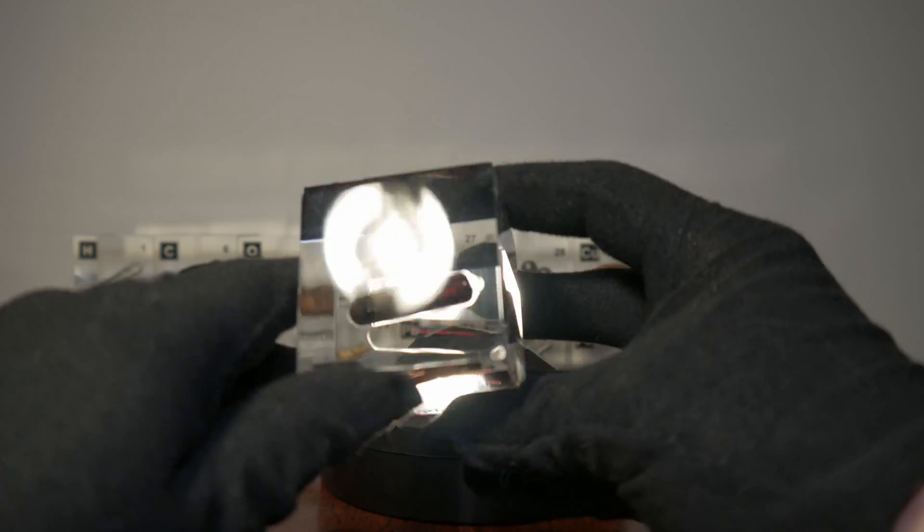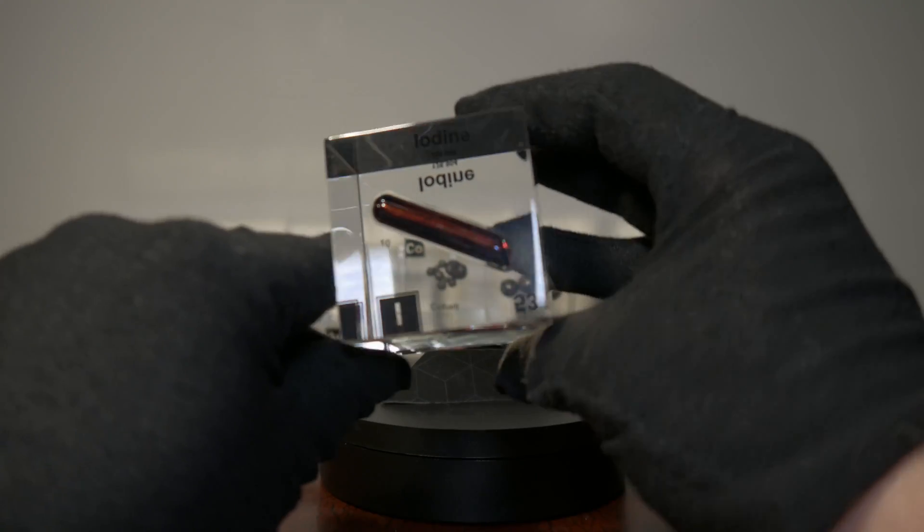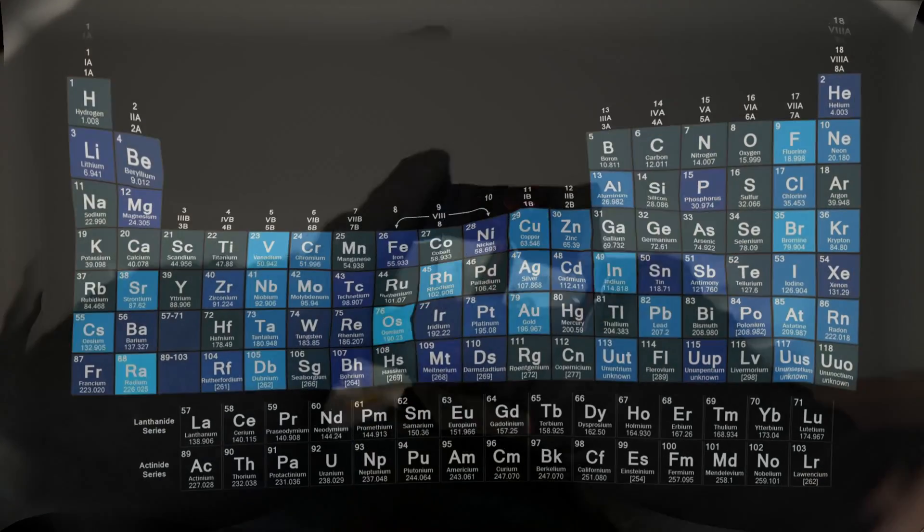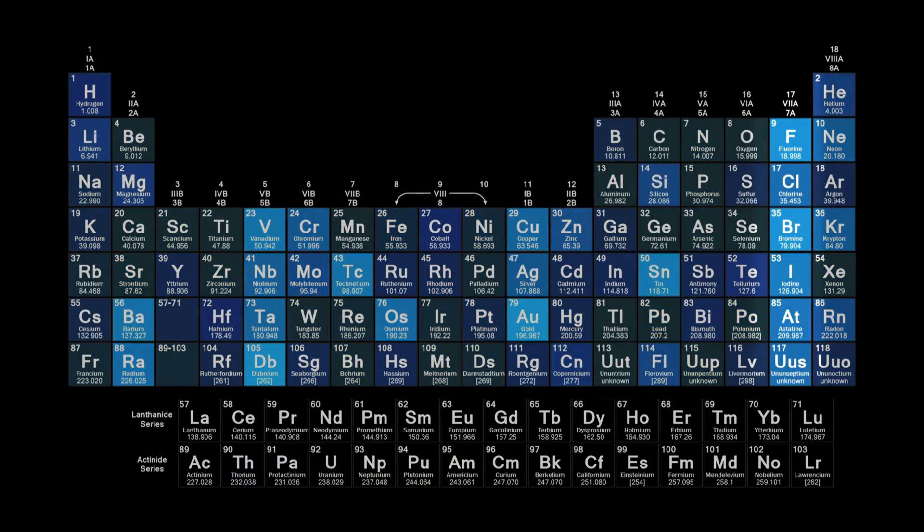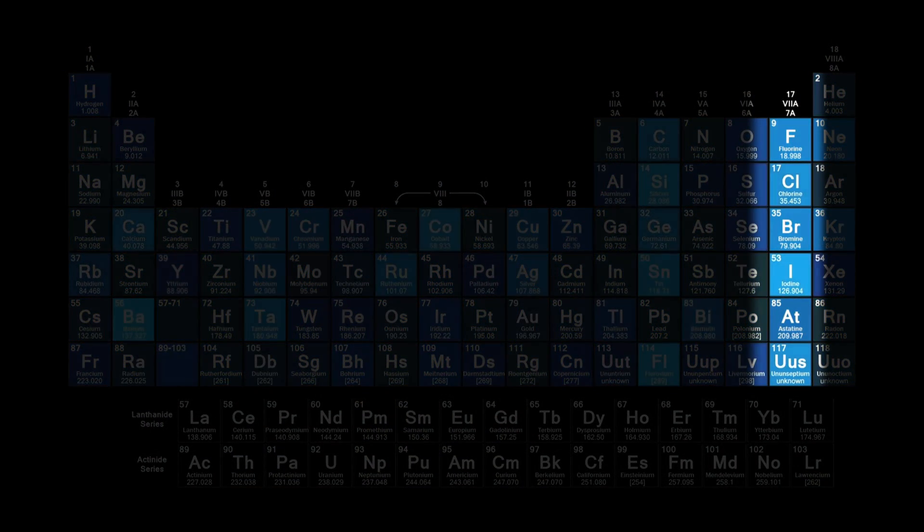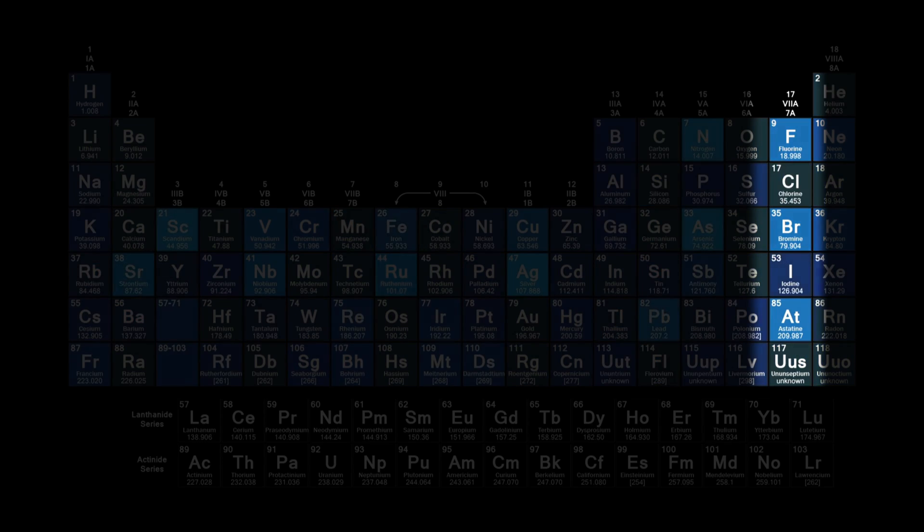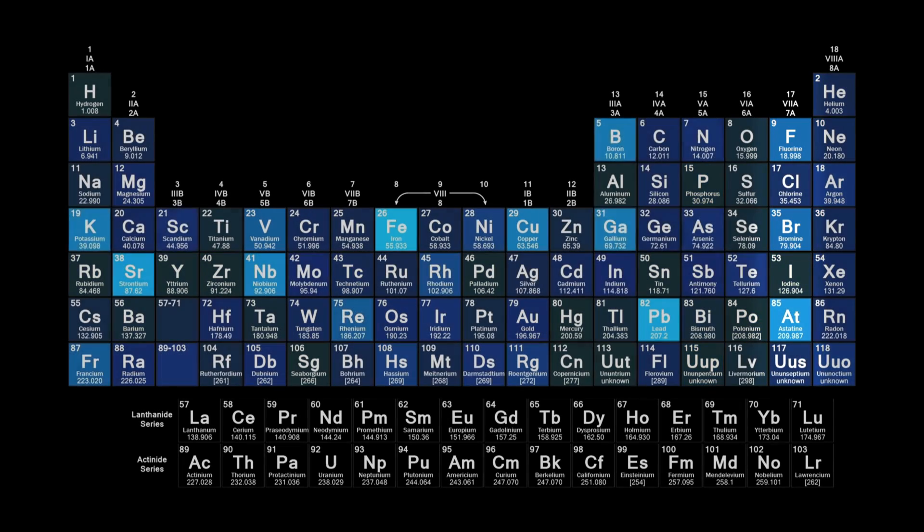Part of the halogen family, also known as the salt makers. This is group 17 of the periodic table. They earned the name salt maker because when they react with metals, they form ionic compounds that are called salts.